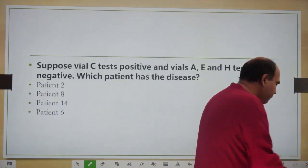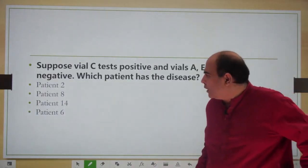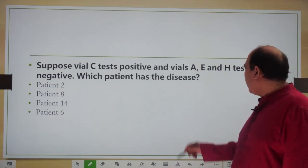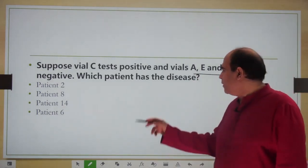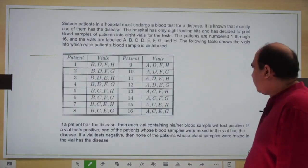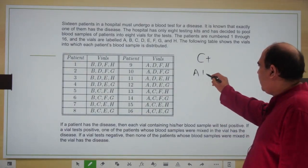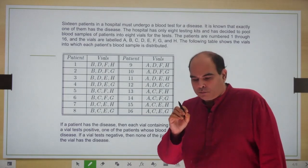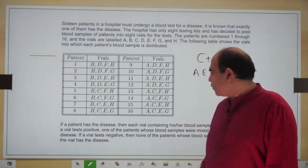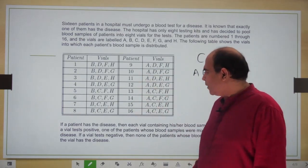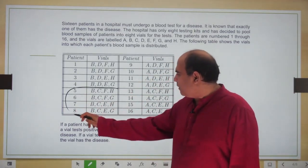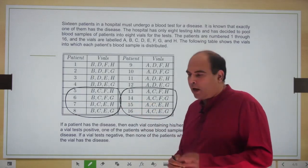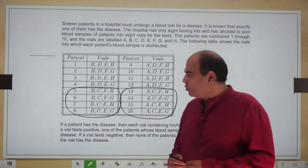The first question in this set says: suppose vial C tests positive and vials A, E, H test negative — which patient has the disease? If C is positive, one of the patients whose blood went into C will be the patient who is positive. Checking through the list, patients 5, 6, 7, 8 and patients 13, 14, 15, 16 — these eight patients form the shortlist. So we eliminate 1, 2, 3, 4 and 9, 10, 11, 12.